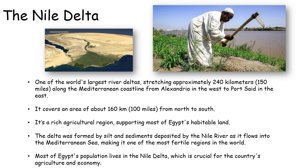An example is the river Nile. It's one of the world's largest river deltas, stretching about 150 miles along the Mediterranean coastline and covering an area of 100 miles from north to south. It's a very rich agricultural region supporting most of Egypt's habitable land. It was formed by silt and sediments deposited by the Nile River as it flows into the Mediterranean Sea. Most of Egypt's population lives in the Nile Delta, making it crucial for the country's agriculture and economy.